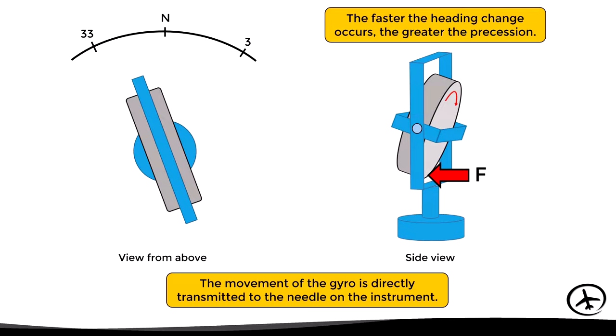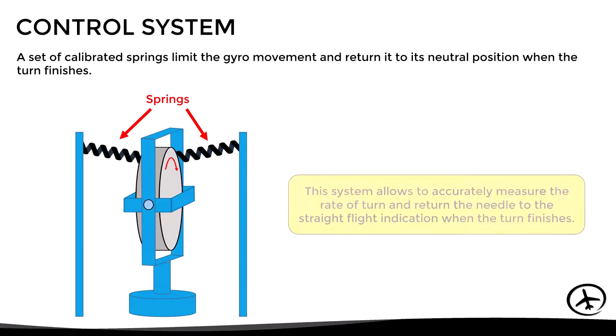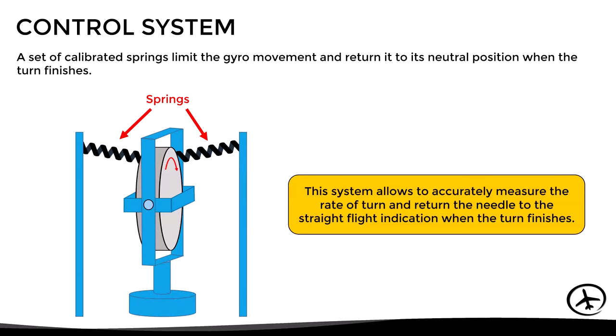The gyro cannot tilt beyond a certain limit because a system of calibrated springs limits the gyro movement and returns it to its neutral position when the aircraft stops turning. This system allows accurate measurement of the rate of turn and returns the needle to the straight flight indication when the turn finishes.